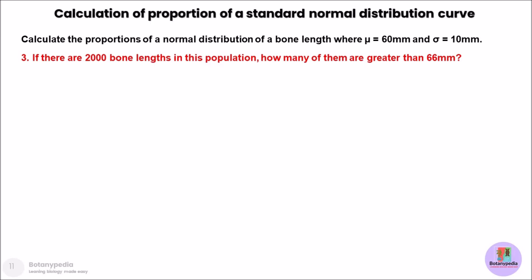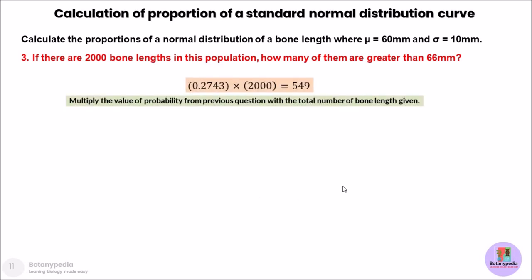Now we move to the third part of this question. Recall: calculate the proportion of a normal distribution of bone length where mu was 60 mm and sigma was 10 mm. If there were 2000 bone lengths given in this population, how many of them are greater than 66 mm? To solve this, we simply multiply the probability value obtained in the previous question by the total number of bone lengths in the population — 2000. This gives us how many bone lengths are greater than 66 mm.